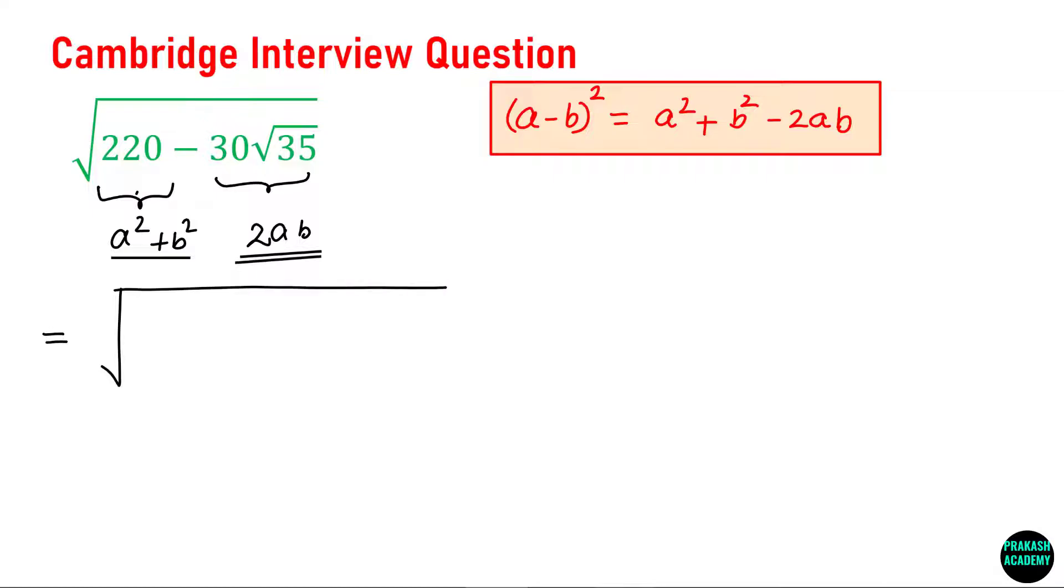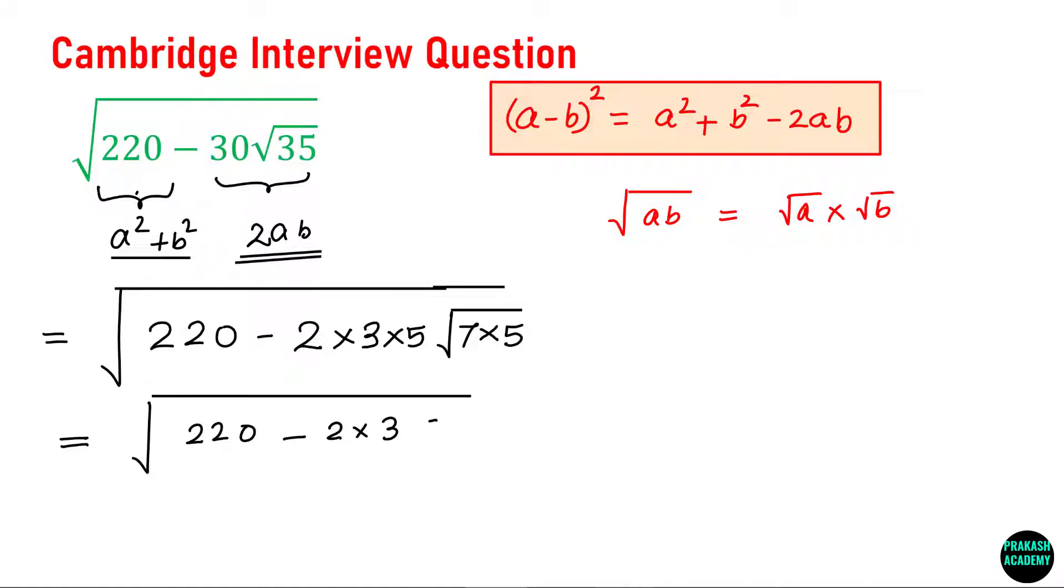To solve this problem we will first factorize the second term. So 2 times 15, and 15 can be written as 3 times 5, and root 35 can be written as 7 times 5. Now you know the rules of power, that root a times b equals root a times root b. If I use this rule I can say this becomes 220 minus 2 times 3 times 5 times root 5 times root 7.